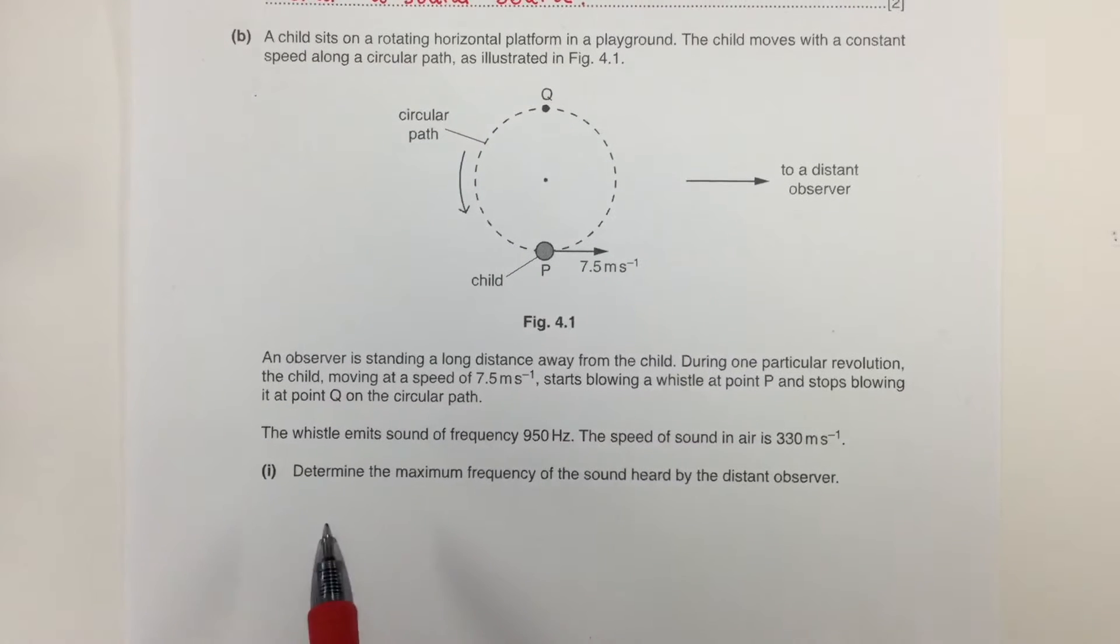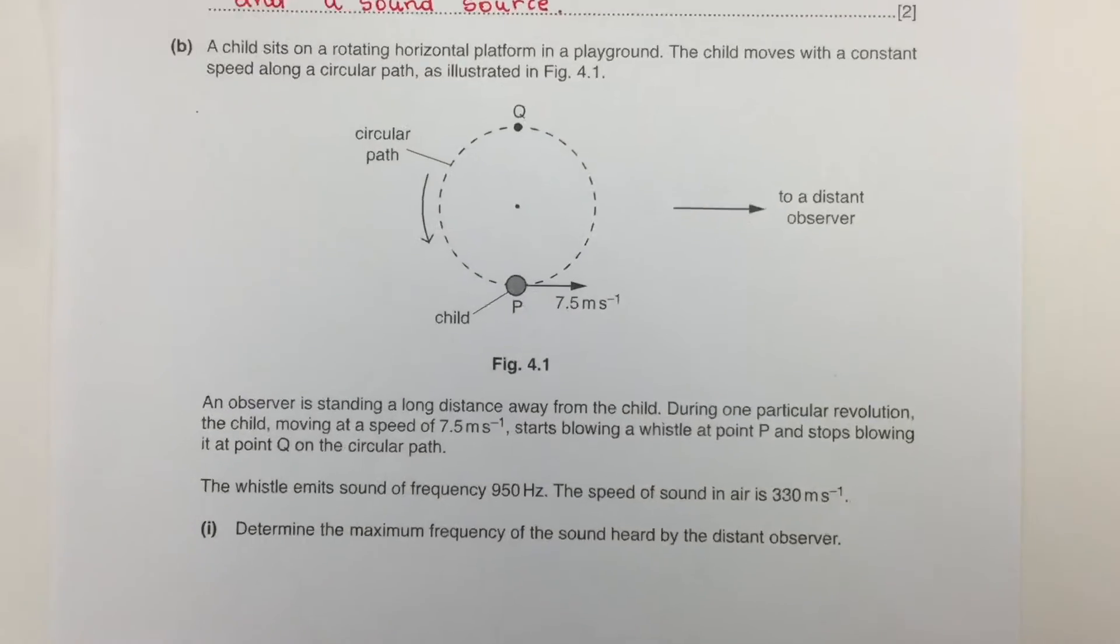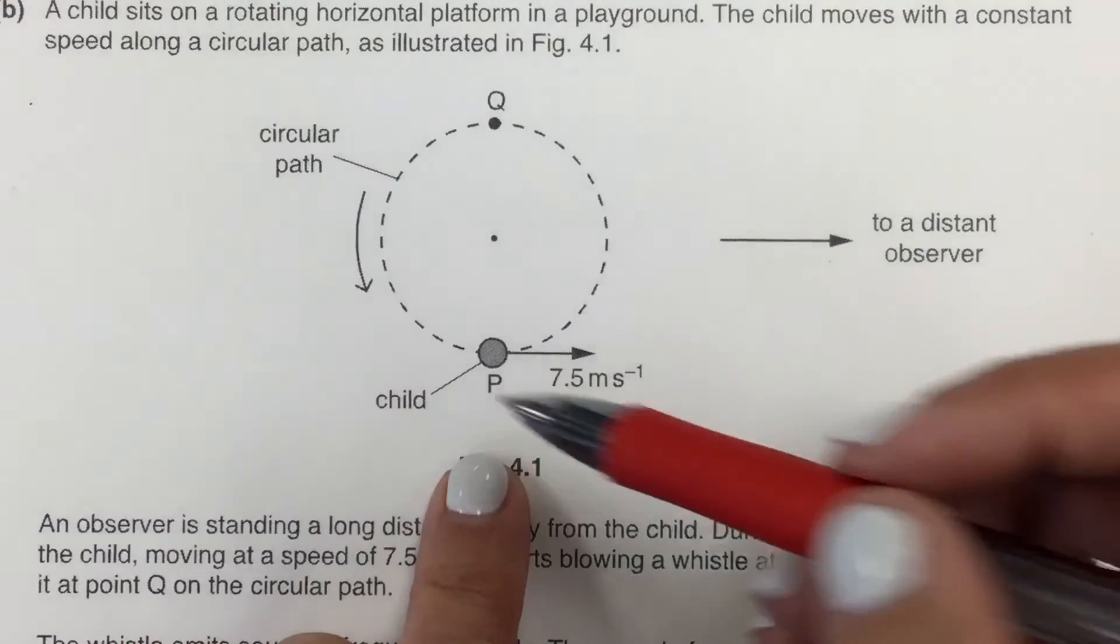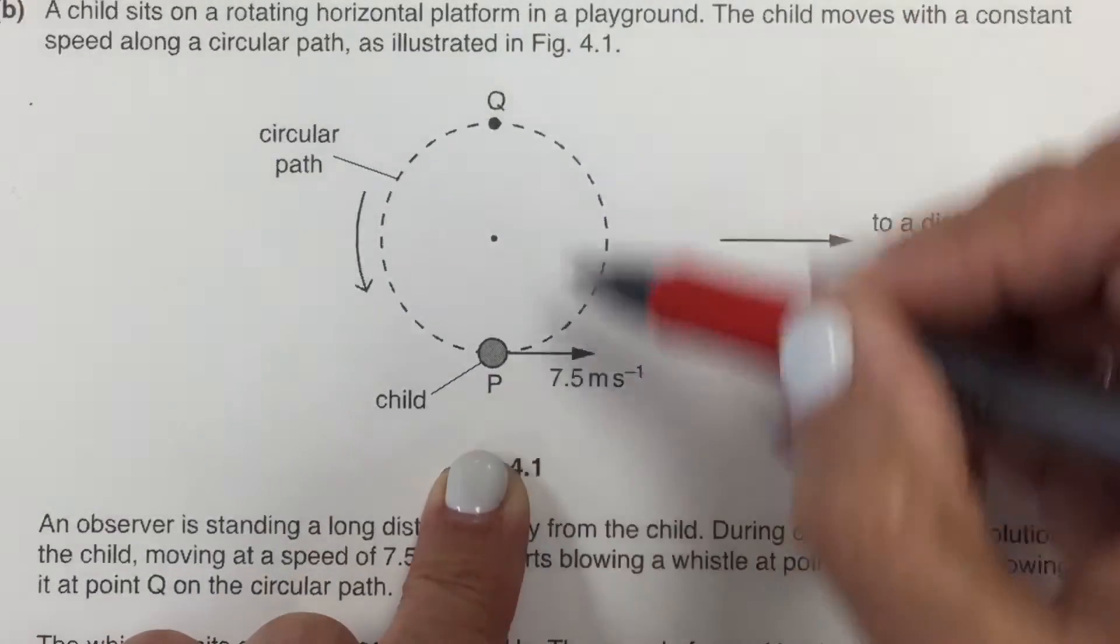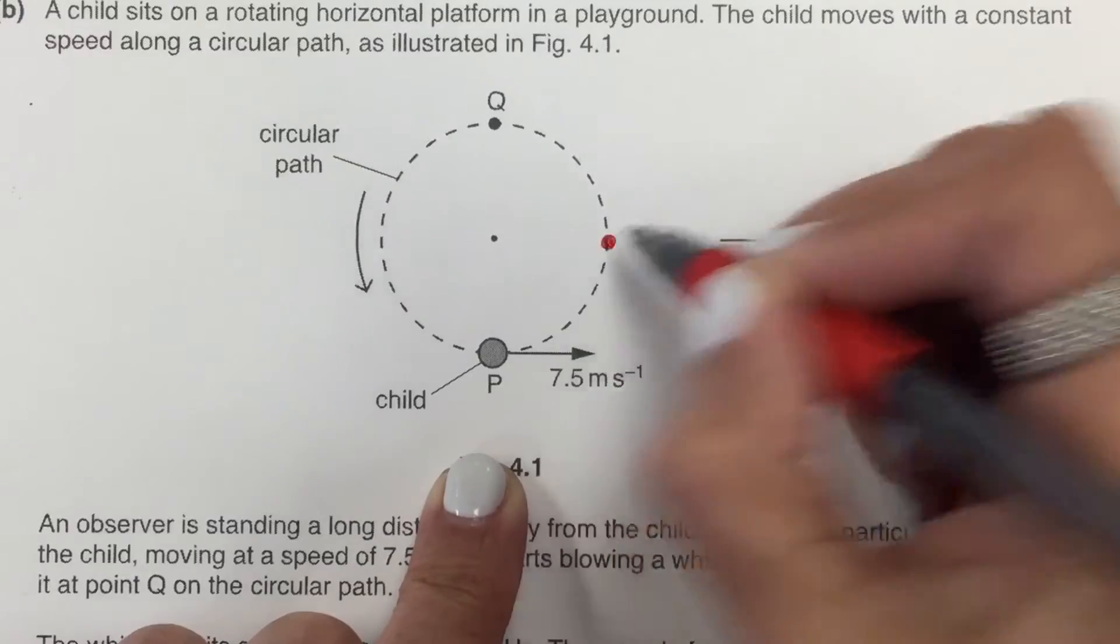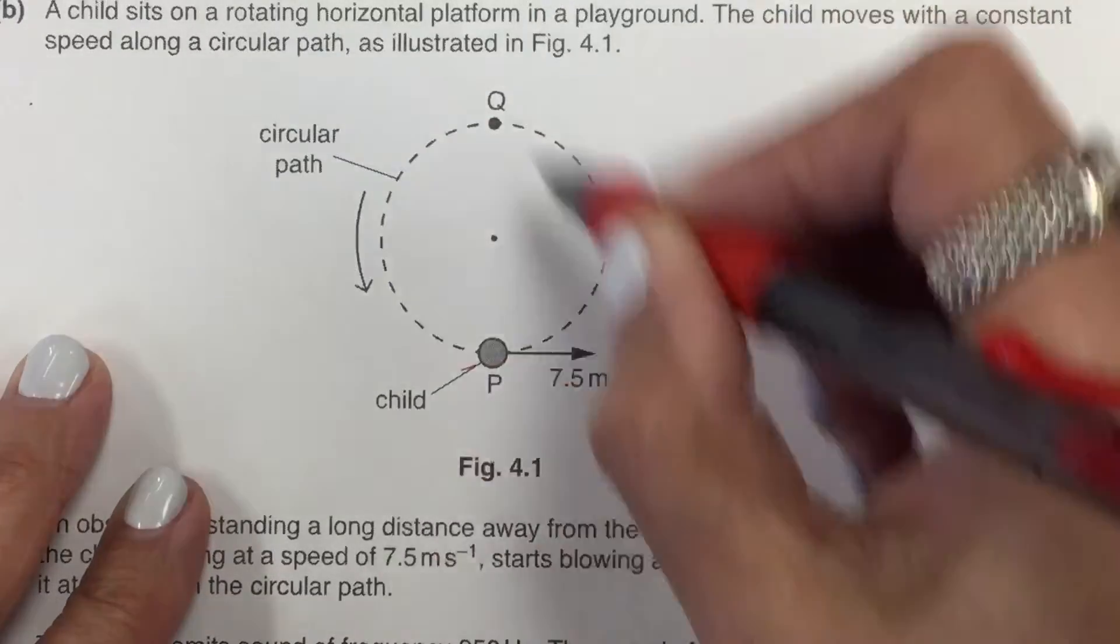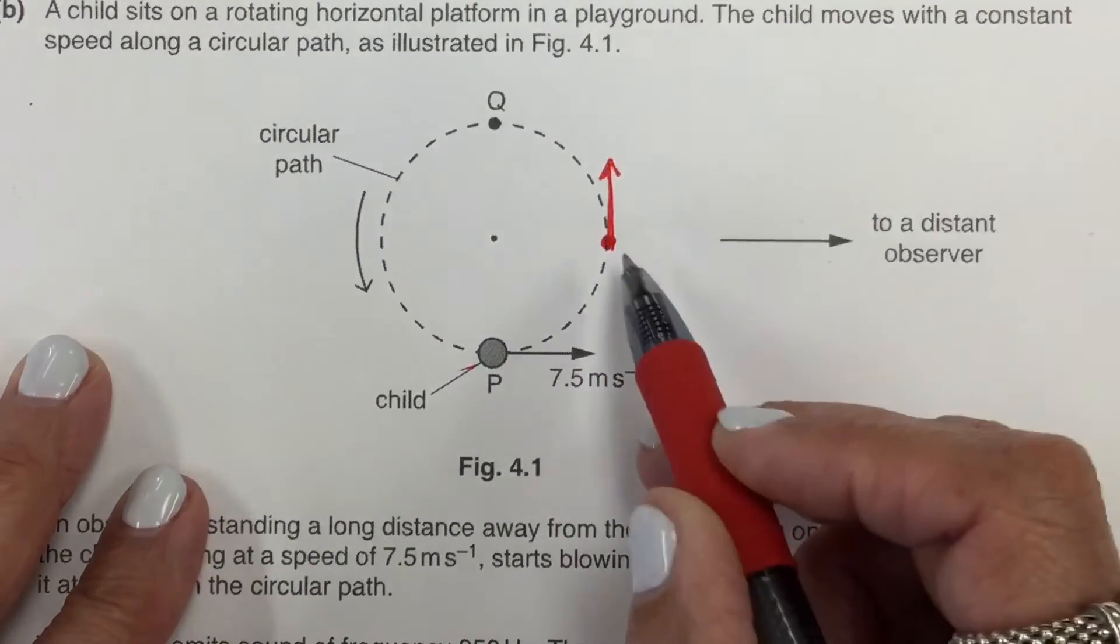The question is to determine the maximum frequency of the sound heard by the distant observer. First, we need to understand how this arrow behaves from point P to point Q. At the midway between both points P and Q, let's say the child is right here. The speed of this circular path is the same, but the direction has changed.